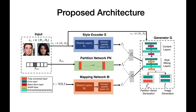This is our proposed architecture. We add domain-specific layers to our style encoder. Next, we introduce a partition network which partitions the style information into style subspaces. We also use a mapping network which samples standard Gaussian style and uses it for domain translation. Our generator outputs the translated image and a partition vector. The generated partition vector is used to regularize the training through a partition consistency loss.